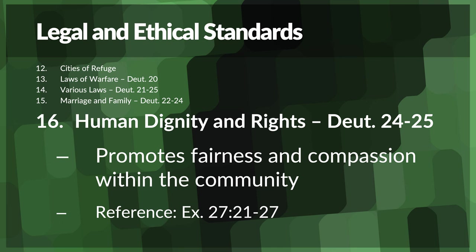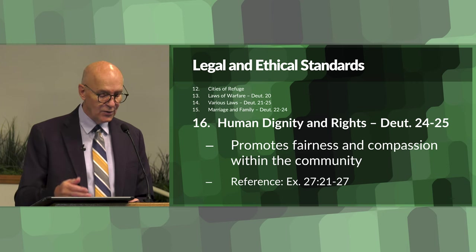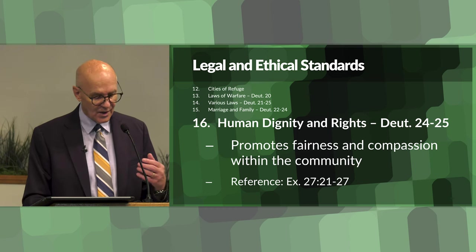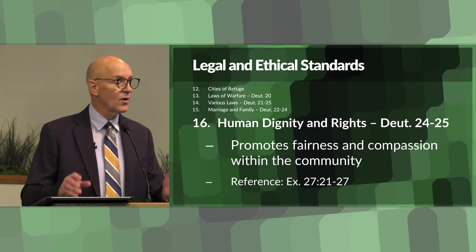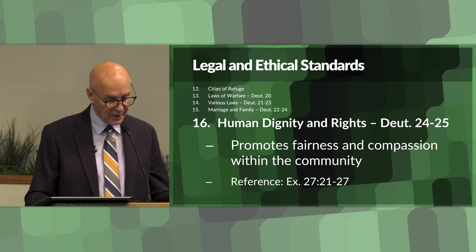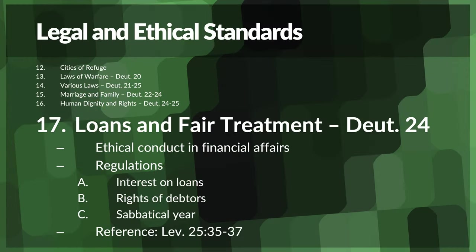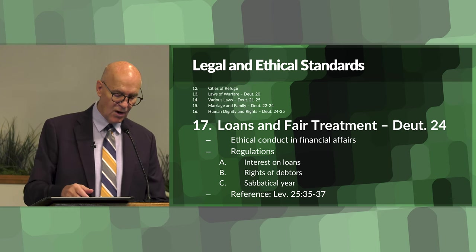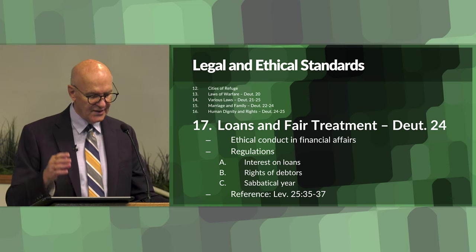Item 15 was about marriage and family in Deuteronomy 22 - regulations for marital relations and family responsibilities. The purpose was to preserve family integrity and ensure protection of rights within the family. You can read about this in Leviticus 18. Item number 16 was about human dignity and rights in Deuteronomy 24 and 25 - protecting the rights and dignity of individuals, including the poor and those who are marginalized in society. The purpose was to promote fairness and compassion within the community for everyone.